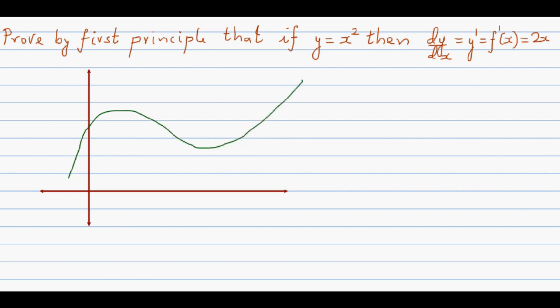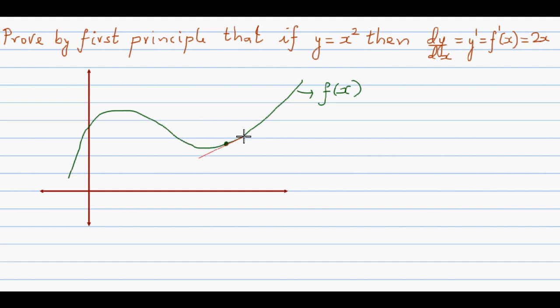Now suppose I want to find — we don't know what the equation of this function is, so let's generalize: this is f of x, y is equal to f of x. Say we want to find what the gradient is at this point — and by gradient at this point, I mean the gradient of the tangent at this point.